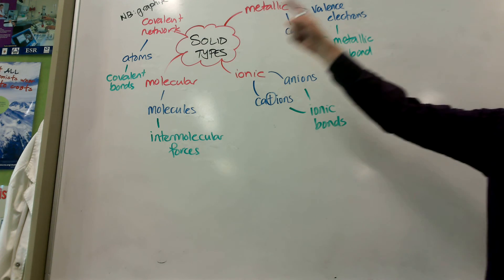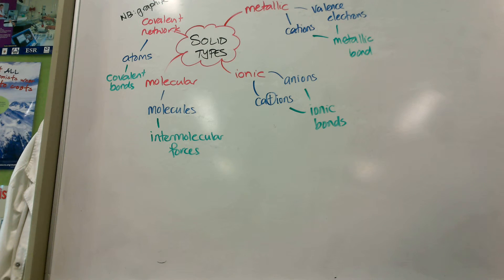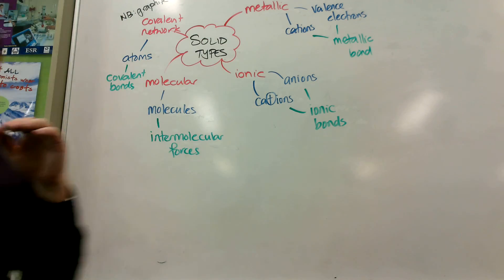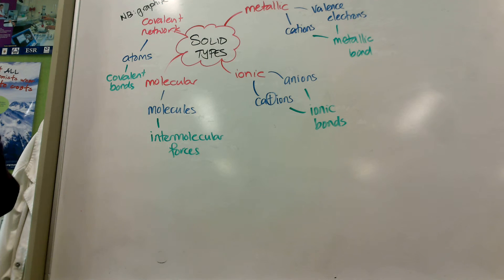Which of those will conduct electricity as solids? Covalent networks. Covalent networks. Only if it's graphite. Only if it's graphite. Because that has that sea of electrons between the two sheets. Okay.